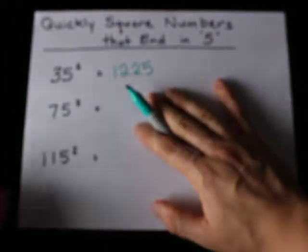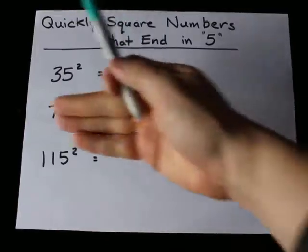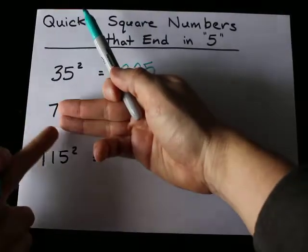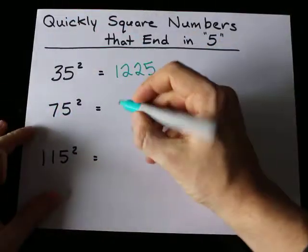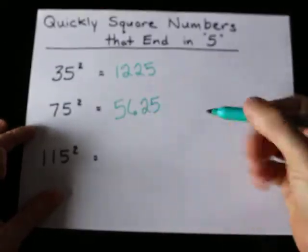Let's let that camera refocus here. 75, come on camera, refocus for me. There we go. 75 squared, chop off the 5. 7 times 8 is 56. 5625. That's it, you're done.